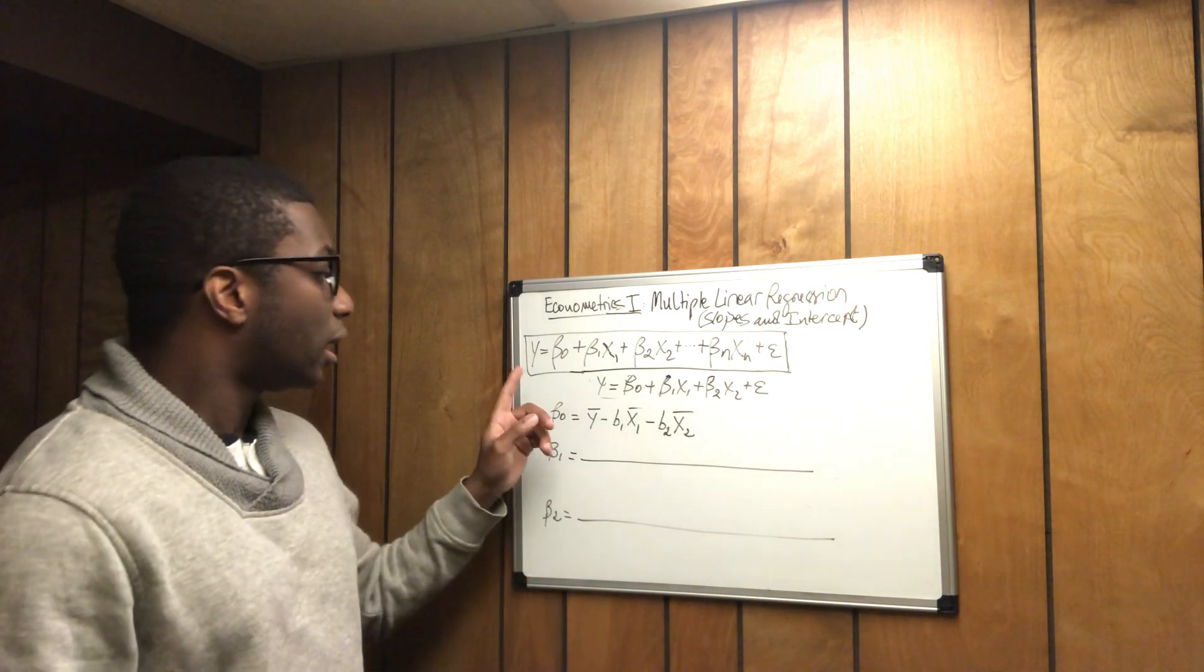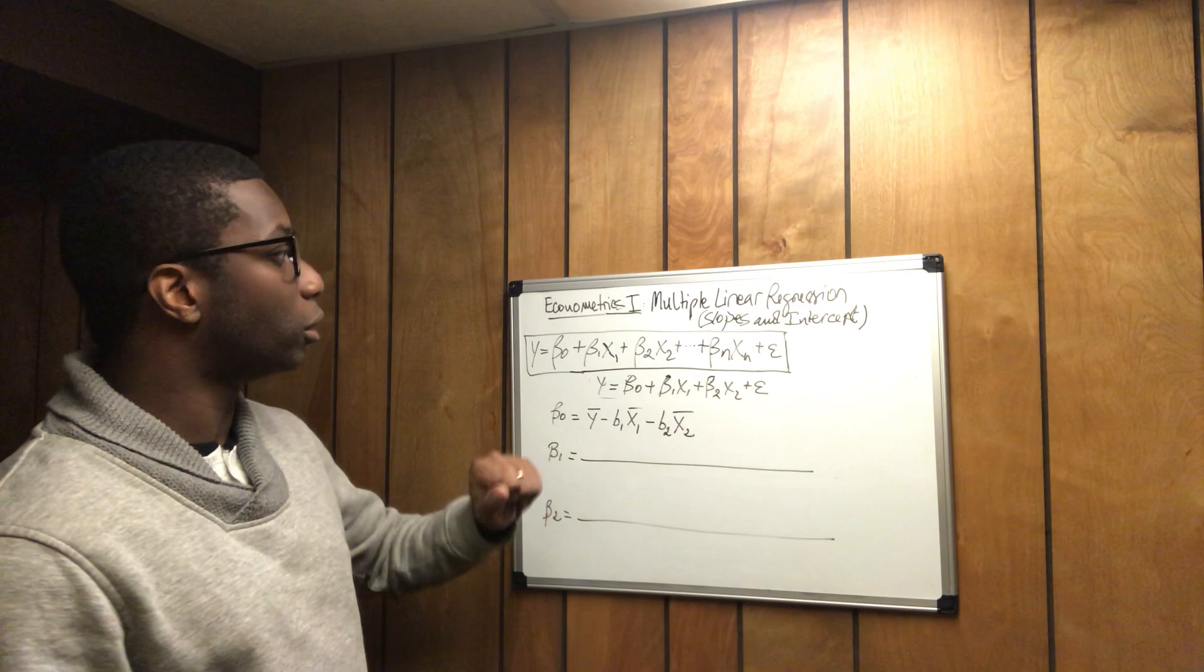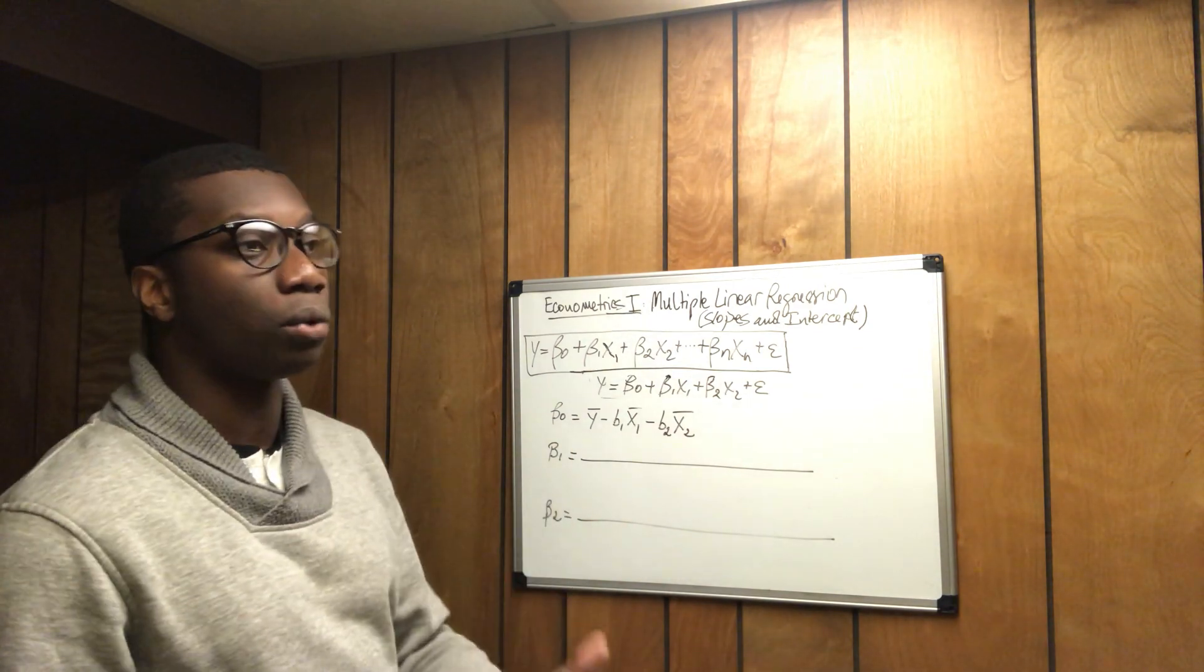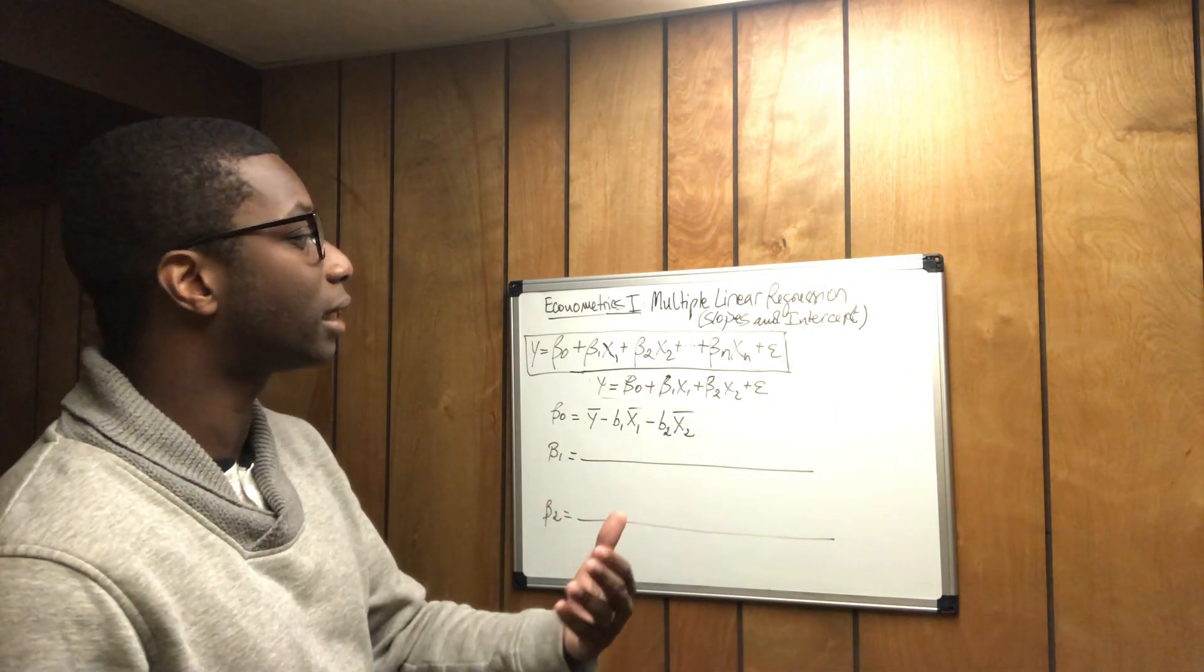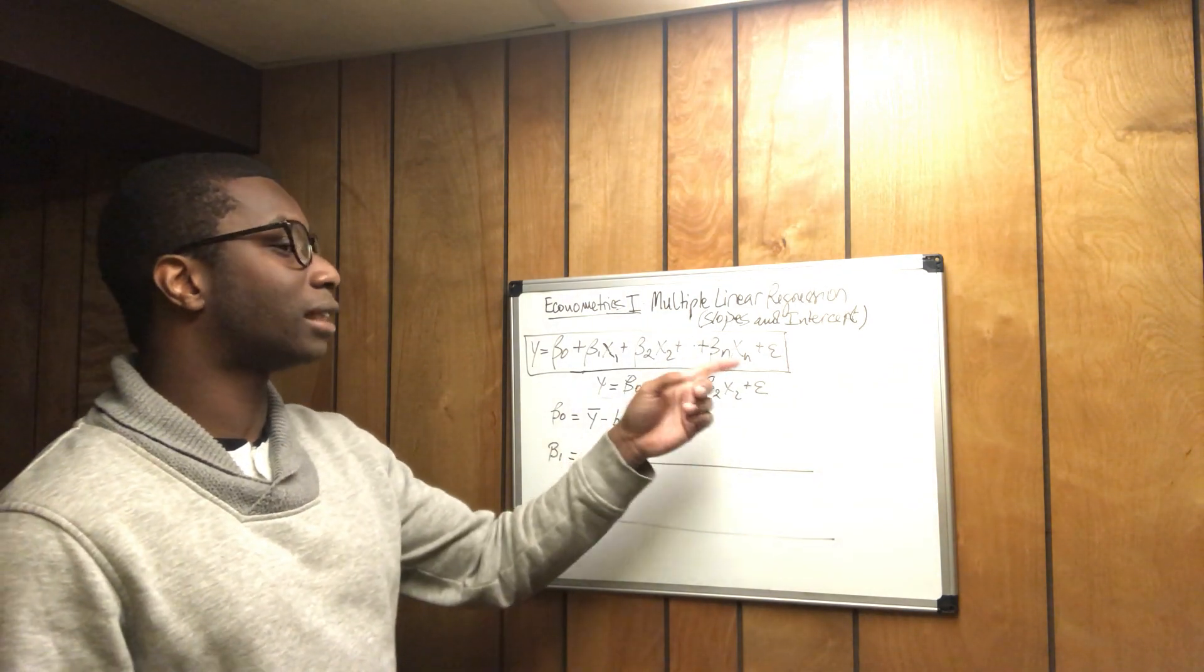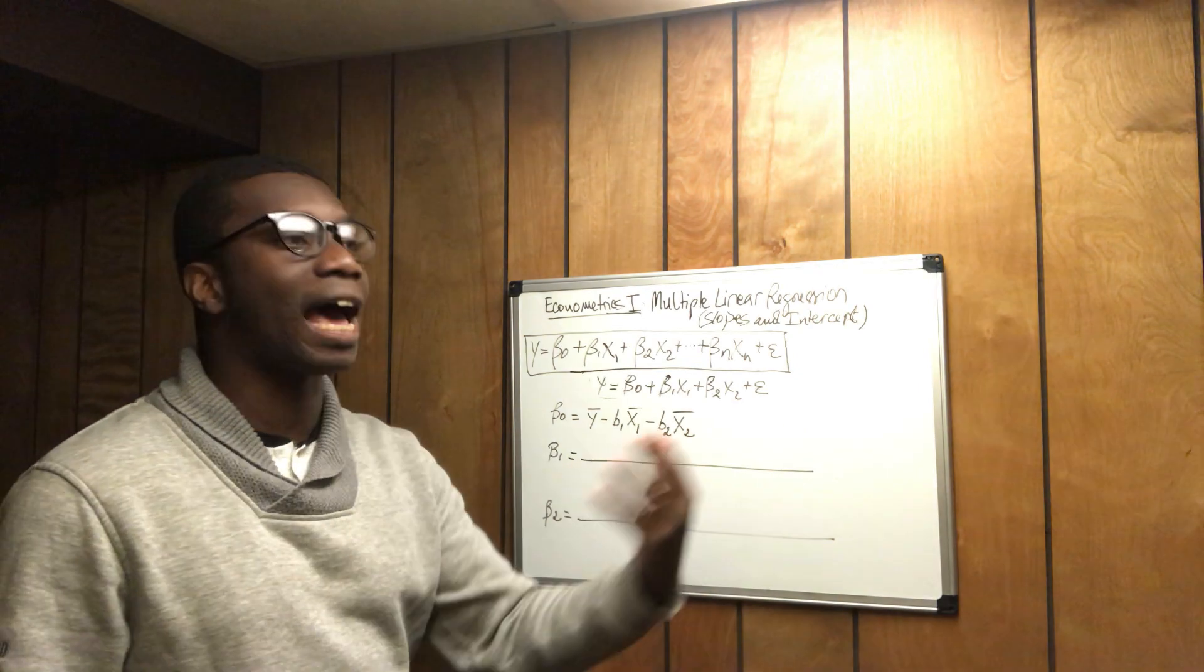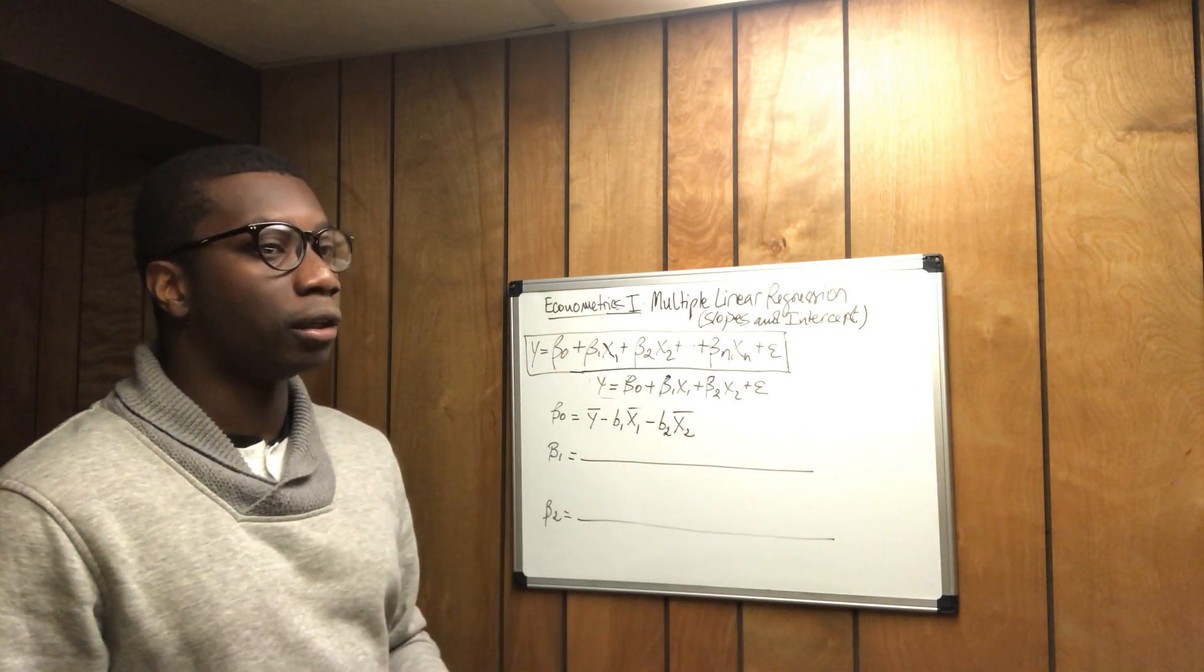So I wrote for you guys the general equation for the multiple linear regression, which is y equals beta 0 plus beta 1 times x1 plus beta 2 times x2 plus beta n times xn plus the standard error. Beta n times xn is simply the amount of regressors added to the initial two primary regressors.